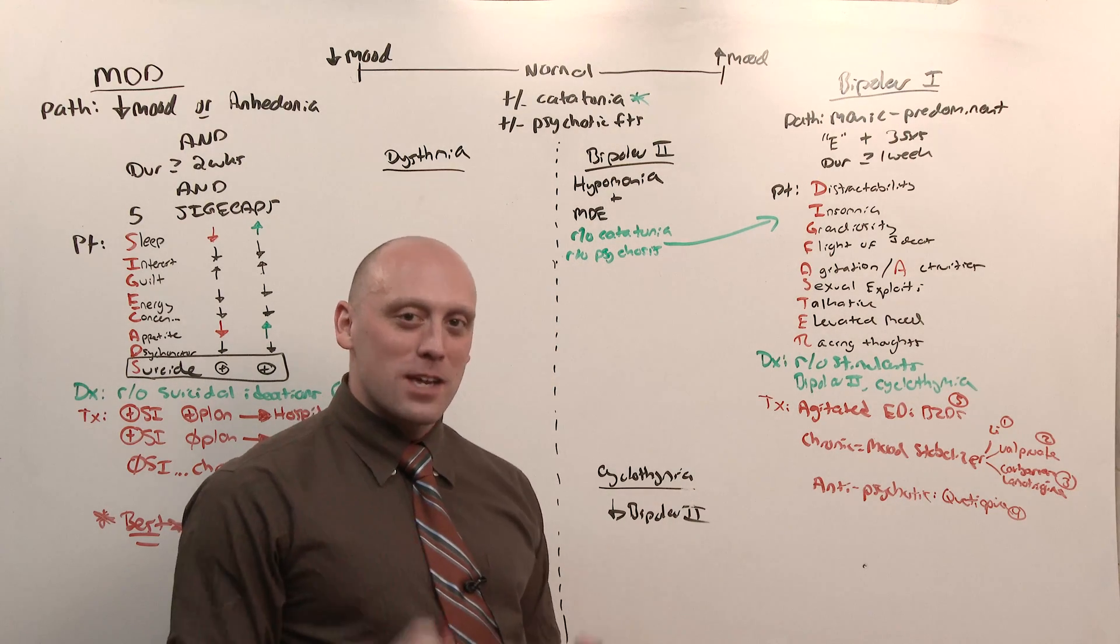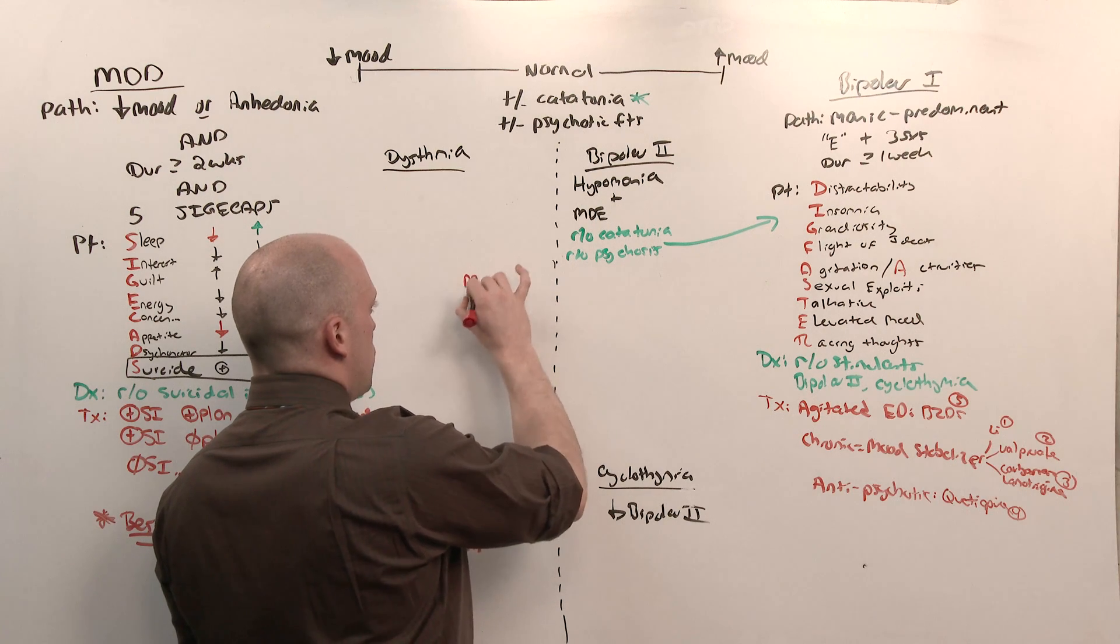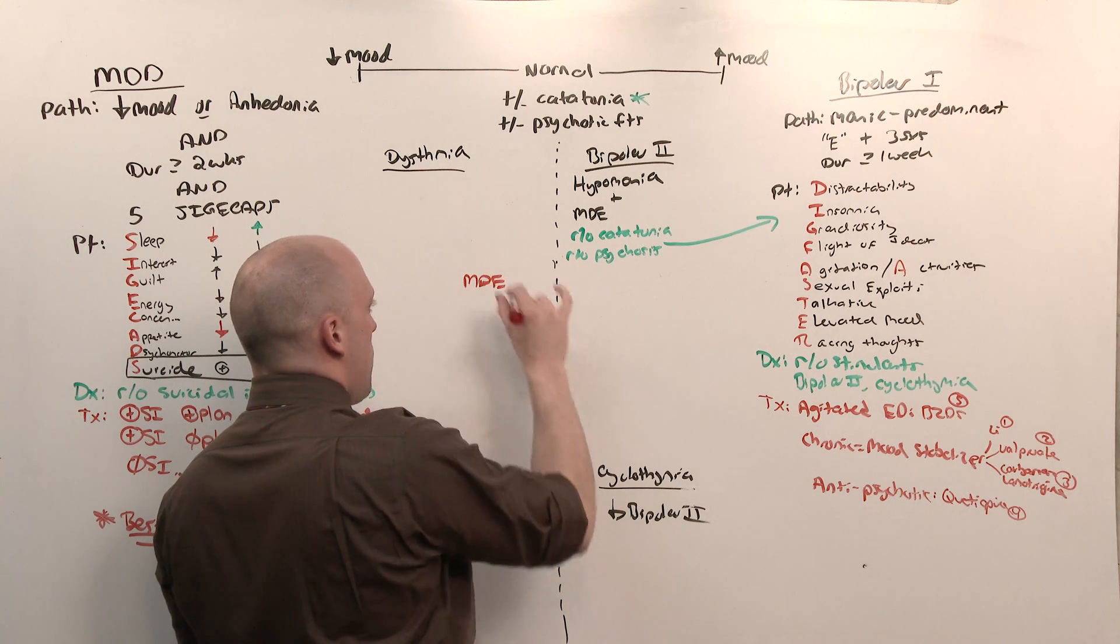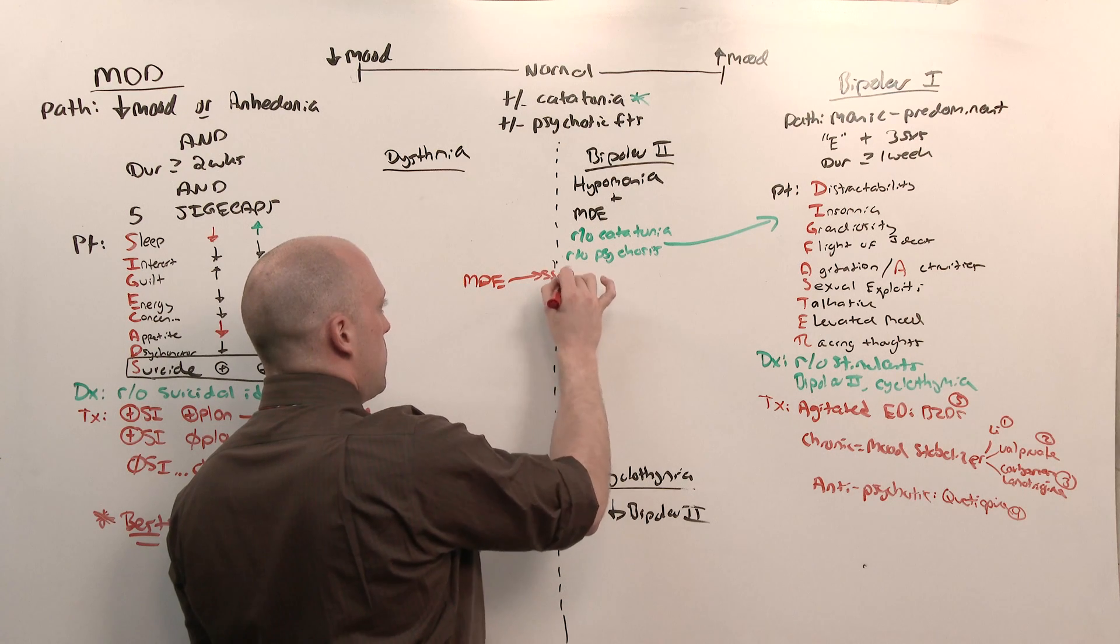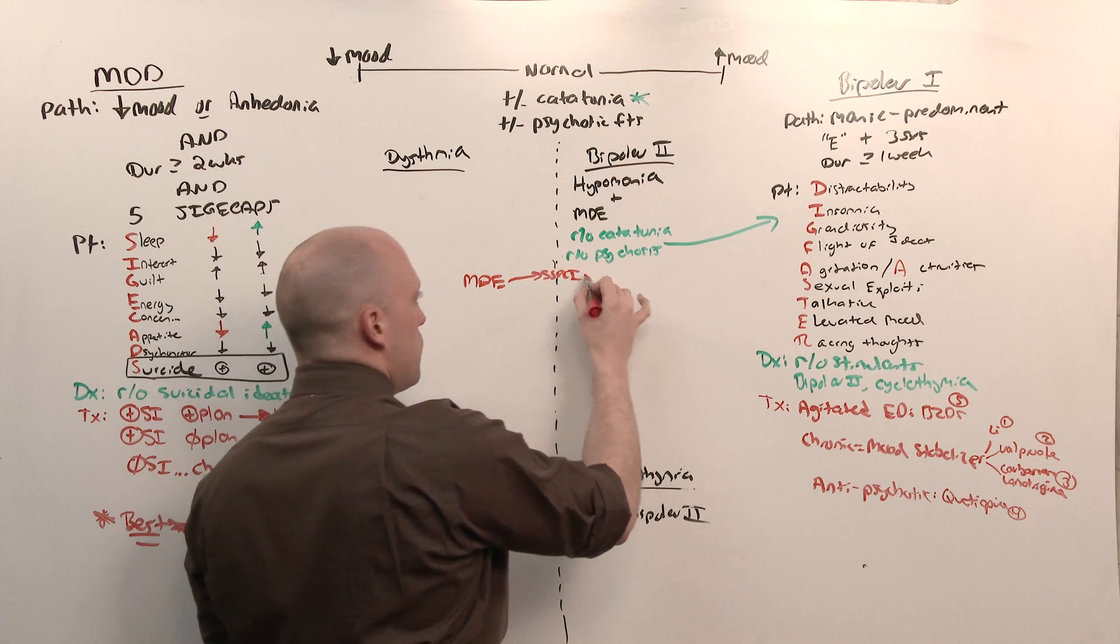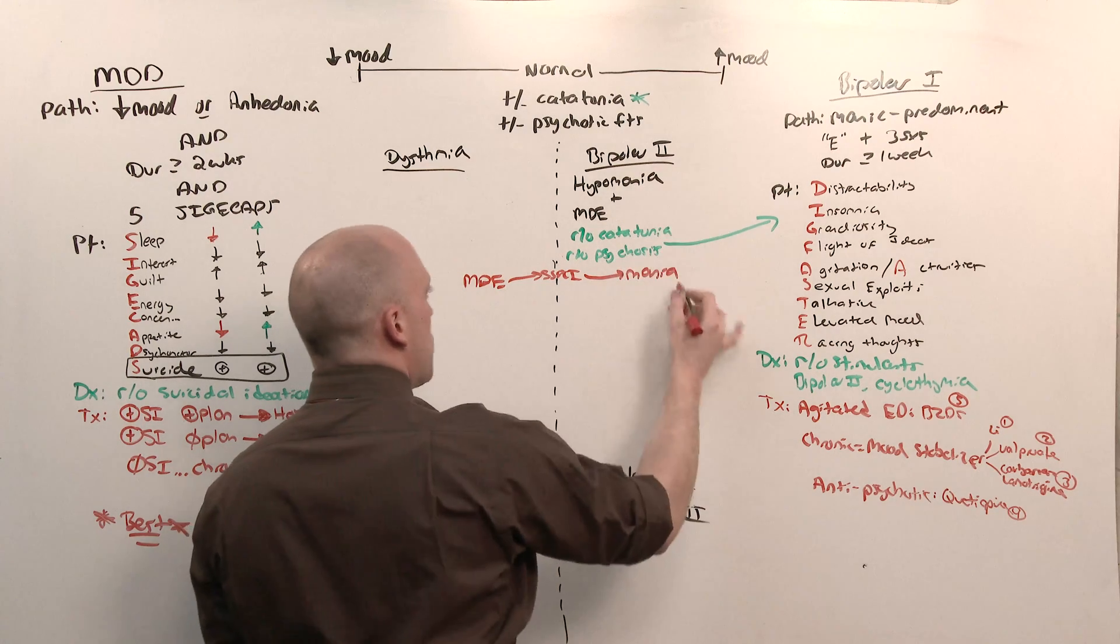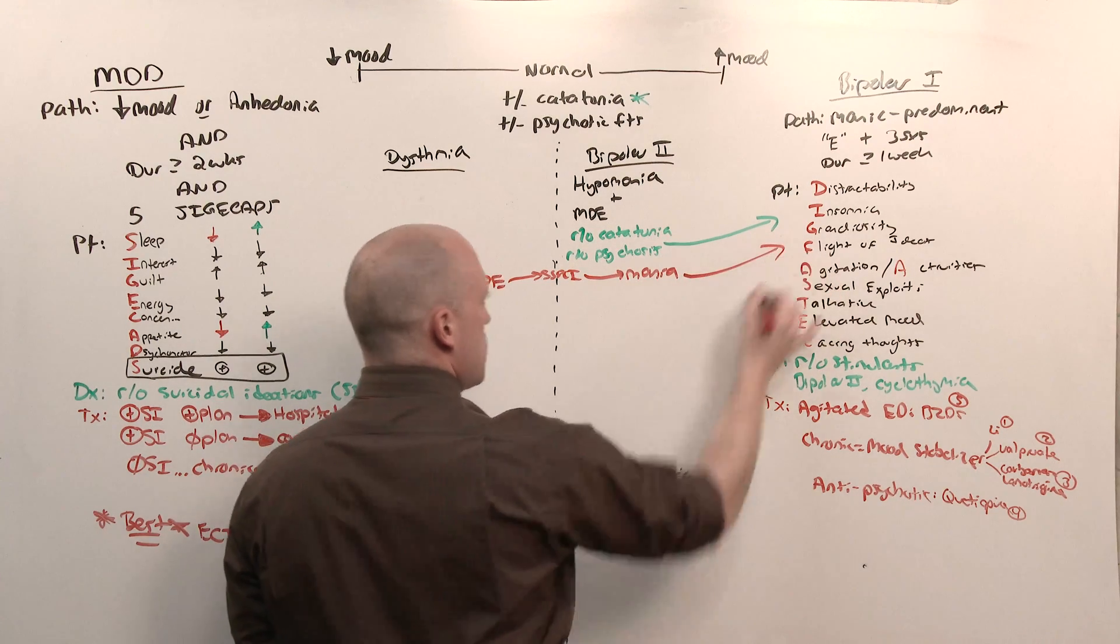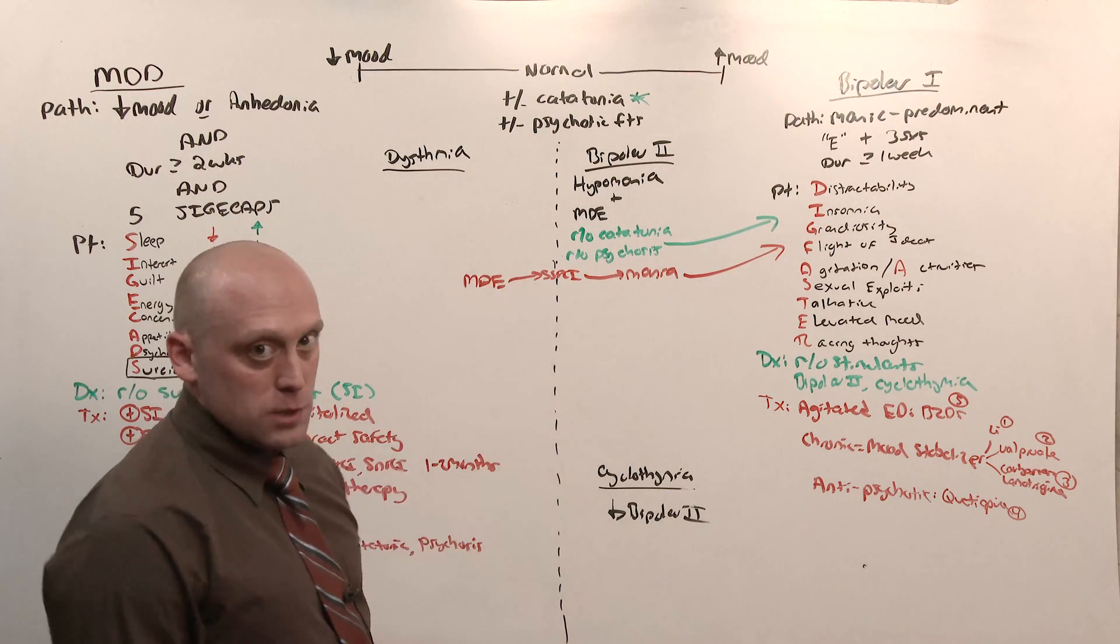The test loves to give you the scenario of someone in a major depressive episode. They're on the left side of the board. You say, I recognize that. I'm going to give them an SSRI. And in doing so, you reveal mania. That could be bipolar 2, but they're probably going to be severe in the presentation, so it'll be bipolar 1. Cyclothymia is bipolar 2, just not as bad.